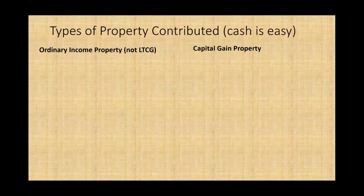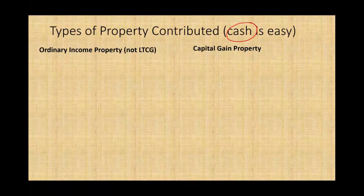Let's talk about the type of property you might contribute. If you contribute cash there's no issue — whatever cash you contribute, you can easily measure it. The problem comes when you contribute something other than cash, such as stocks, land, buildings, or vehicles. We differentiate between ordinary income property and capital gain property.